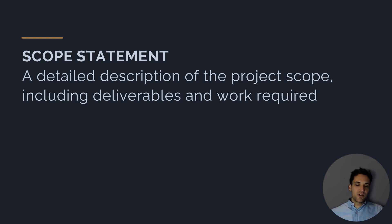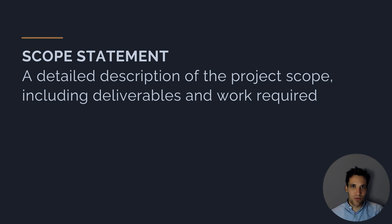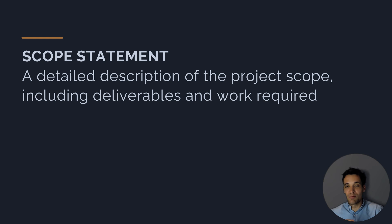Once we've collected all our requirements, we put them together in the project scope statement — a detailed description of the project scope including the deliverables and the work required. The project scope statement will feature the product scope, the deliverables, and also the entire project scope, defining the work we need to do to complete those deliverables. The scope statement is one of the most important project documents — it will prevent scope creep, budget blowouts, and schedule delays, because we clearly know and can articulate the work we're going to be doing.